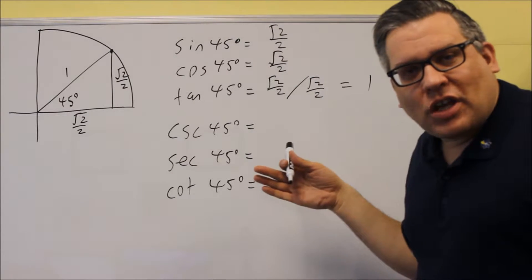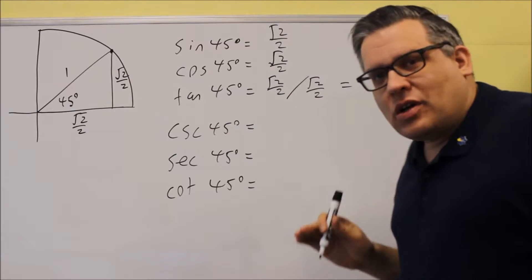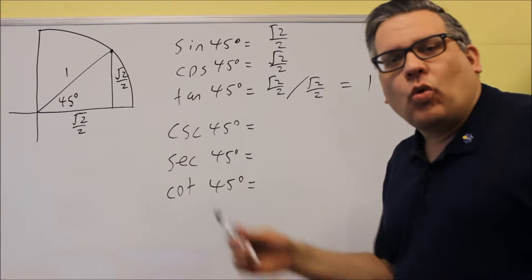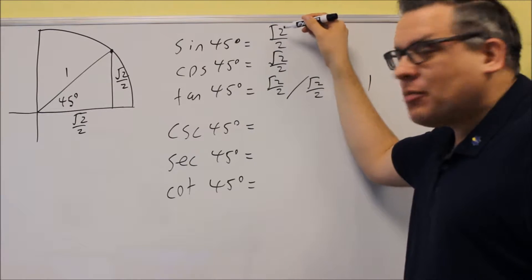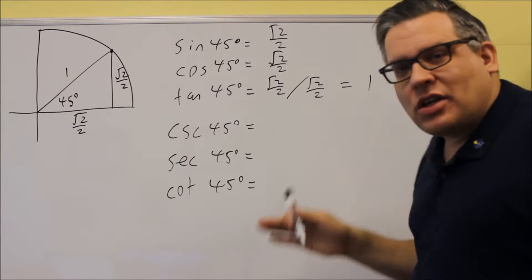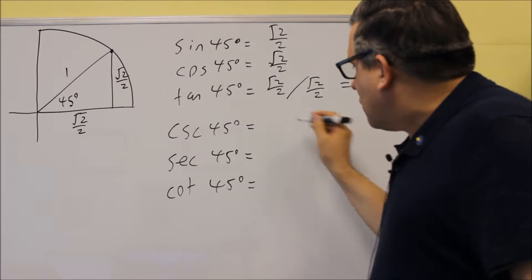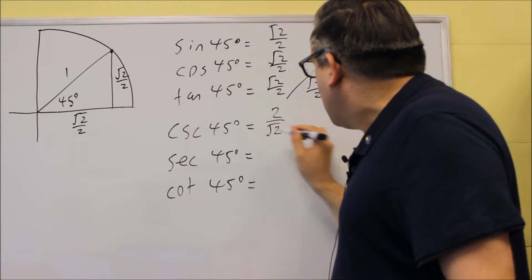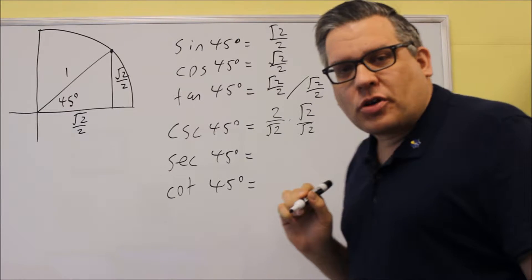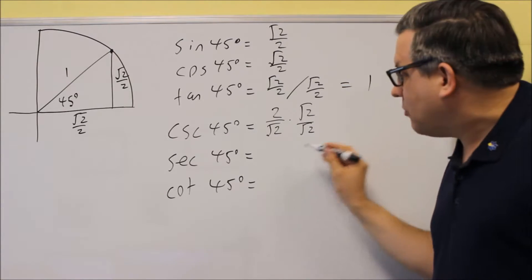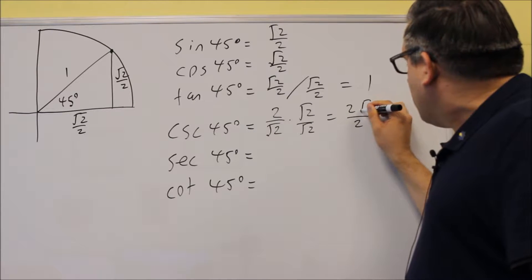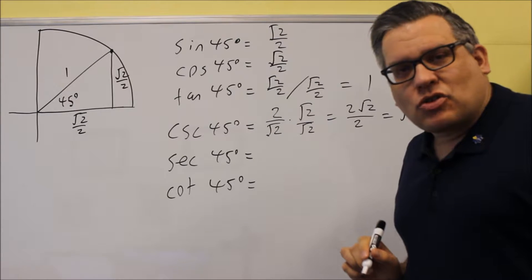Now we can use the reciprocal definitions to get the remaining values. The cosecant is 1 divided by y, so it would be 1 divided by root 2 over 2, which means we just flip it to get 2 over root 2. But you don't want to leave your answer like that — you need to rationalize. Multiply top and bottom by root 2, and you'll get 2 root 2 over 2, and then the 2's cancel, leaving square root of 2.